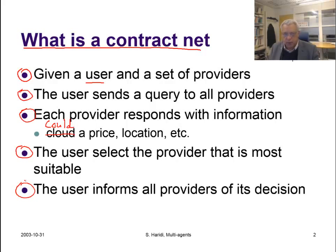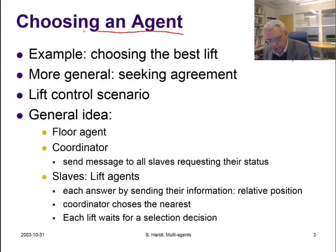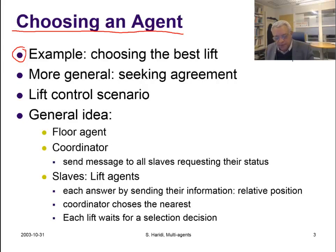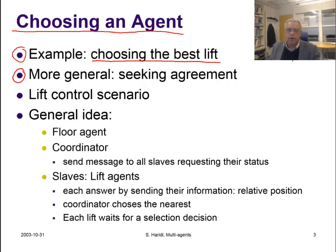Let us illustrate this protocol with an example. We are choosing an agent, and the example we are going to use is a simplified one. We will see a more sophisticated and realistic example when we work with programming exercises. It's a scenario of a lift control system, or elevator depending on your language. We want to choose the best lift, and more generally we are seeking a form of agreement — when we choose one lift, the others will also agree that they are not chosen.